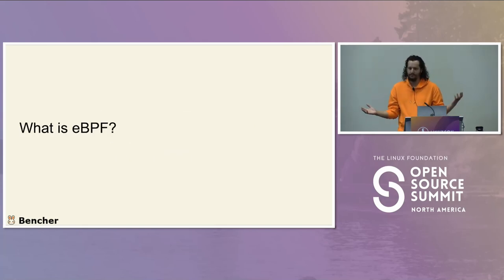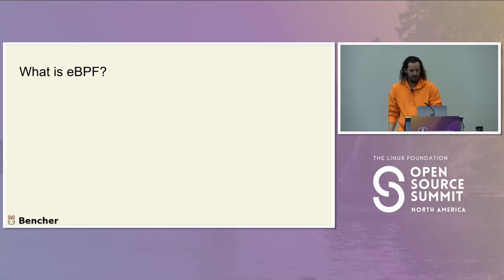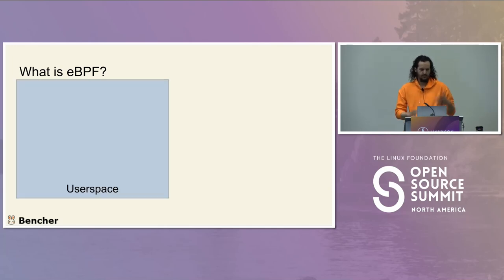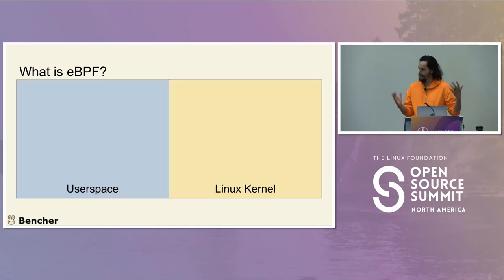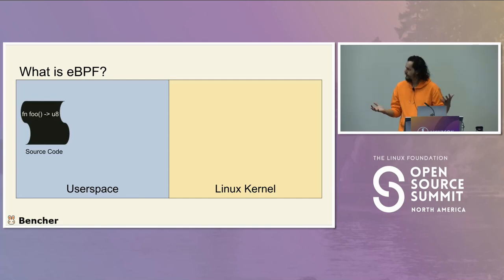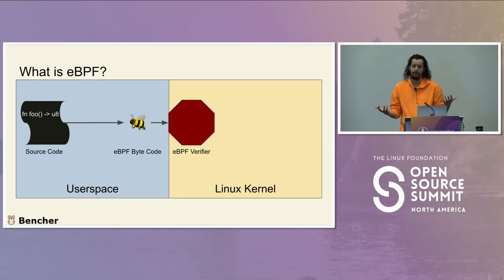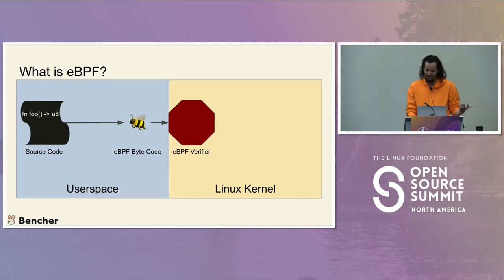So what is eBPF? At a high level, eBPF is a virtual machine within the kernel that runs a special kind of bytecode. You've got user space and you've got the Linux kernel. You take your source code and compile it into eBPF bytecode. Then it goes into the verifier, and the verifier evaluates your eBPF code and basically has to solve the halting problem with it.